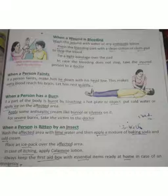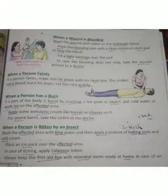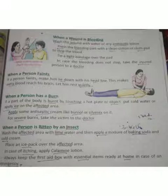اس کے بعد: press the bleeding part with a clean cotton or cloth pad to stop the blood۔ جہاں سے خون نکل رہا ہو وہاں cotton یا کپڑے سے دبائیں تاکہ خون رک جائے۔ پھر tie a tight bandage over the pad۔ Bandage کو tightly بند کریں تاکہ bleeding stop ہو جائے۔ In case the bleeding does not stop, take the injured person to a doctor۔